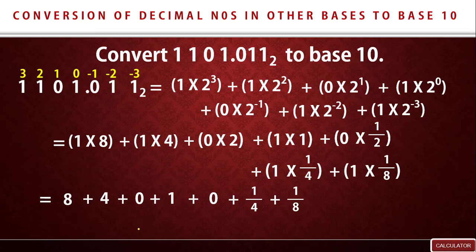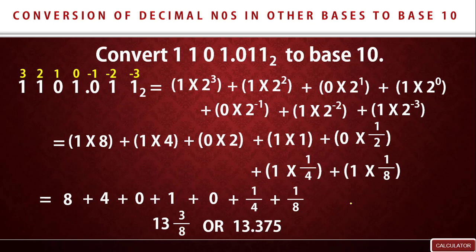Our answer is 13 and 3 over 8. We added 8 plus 4 plus 1 to get 13, and 1 over 4 plus 1 over 8 gave us 3 over 8. You can also use your calculator or leave your answer in decimal form. Using a calculator, 13 and 3 over 8 equals 13.375. So the conversion of 1101.011 in base 2 to base 10 is 13 and 3 over 8, or 13.375.